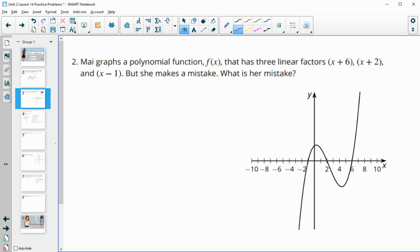Number two: Mai graphs a polynomial function f(x) that has three linear factors (x+6), (x+2), and (x-1), but she makes a mistake. What was her mistake? We can see that her graph goes through negative 1, positive 2, and positive 6 as her zeros.